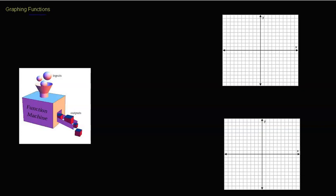So we're going to graph functions. I found a better picture of a function machine than what I tried to draw last time. The inputs are the X's — it's what we input into a function formula. So they're putting in these balls, and the output, the outcome, are these rectangular prisms — that's going to be your Y. You input one thing and you get another thing out.